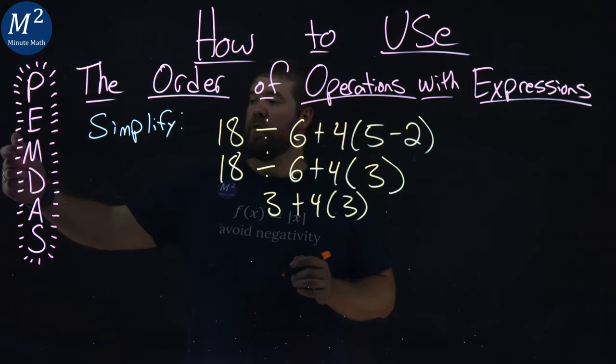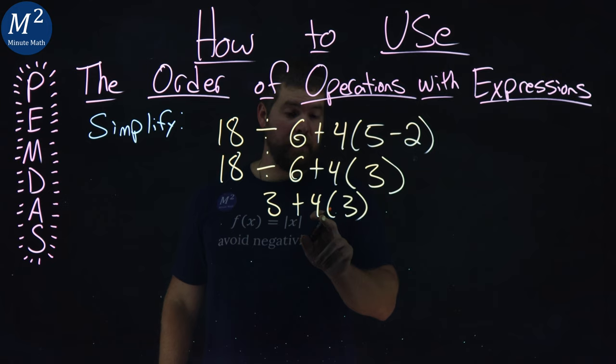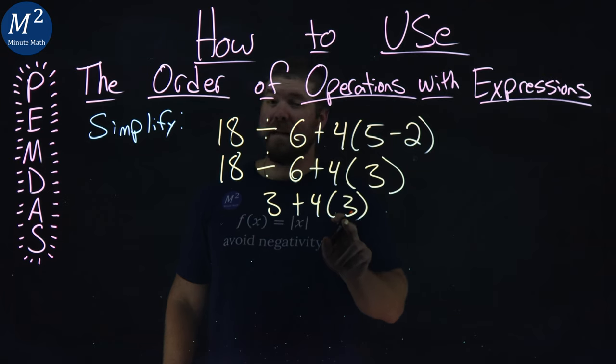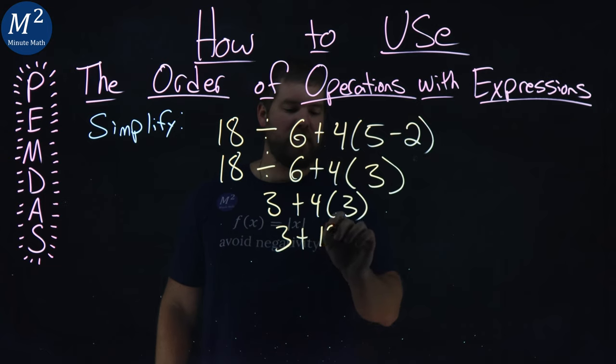Again, multiplication and division are the same class ranking here, and that's the multiplication going on right here. So we have 4 times 3 would be next. So 3 plus 4 times 3 is a 12.